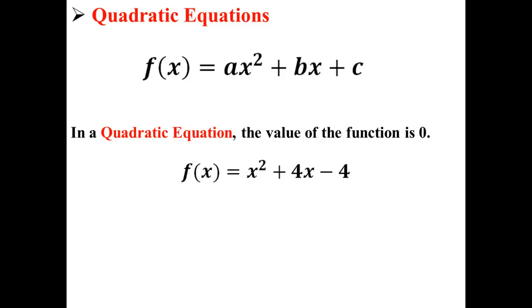Here we have a quadratic function f of x is equal to x squared plus 4x minus 4. As an equation, this is simply 0 is equal to x squared plus 4x minus 4. Now we can actually solve for x.